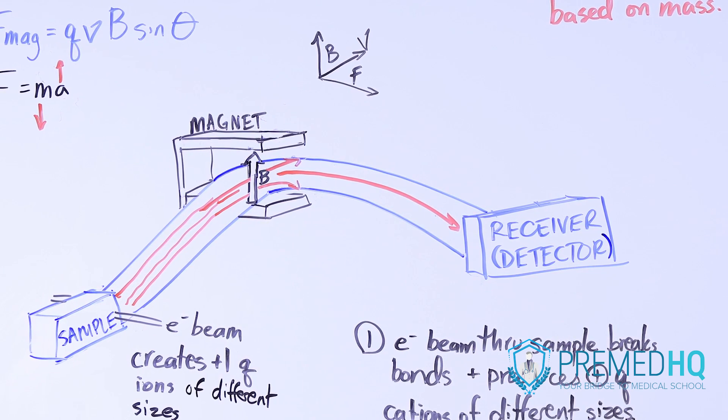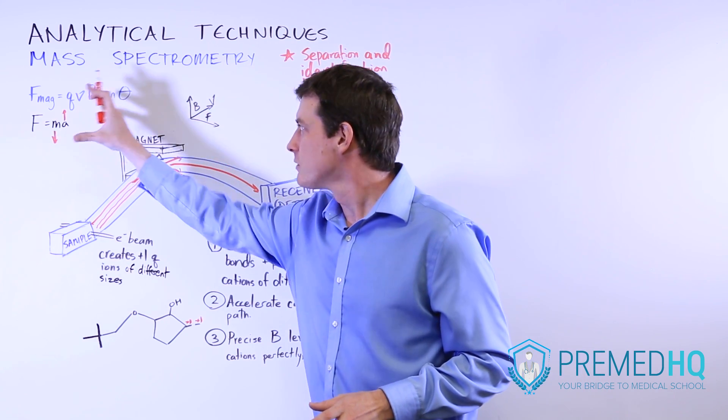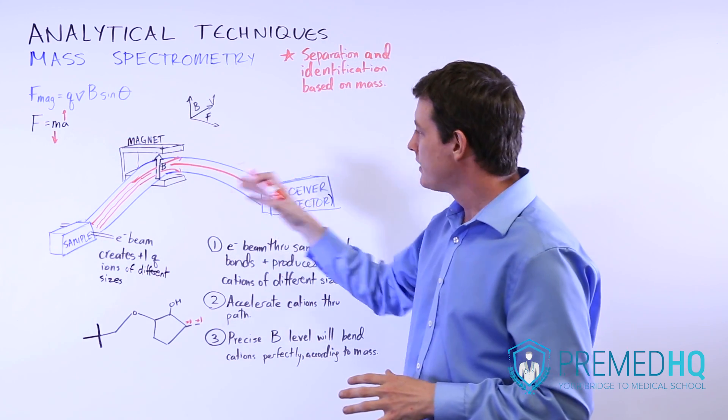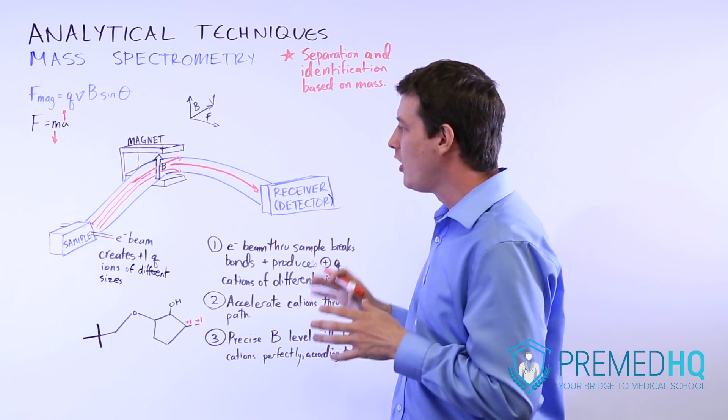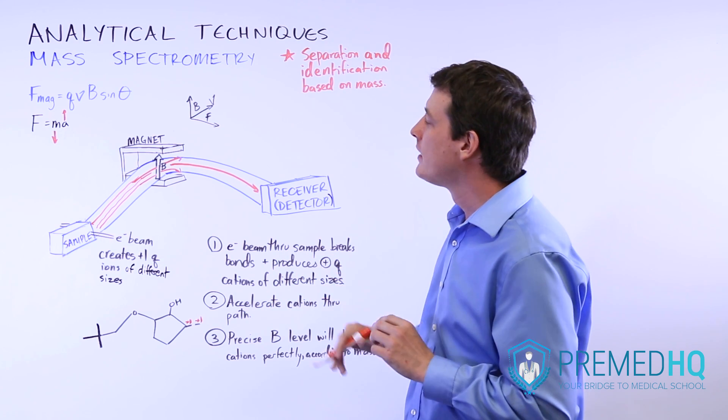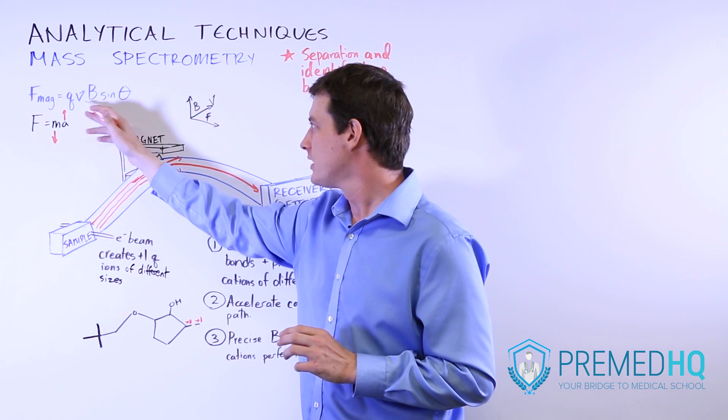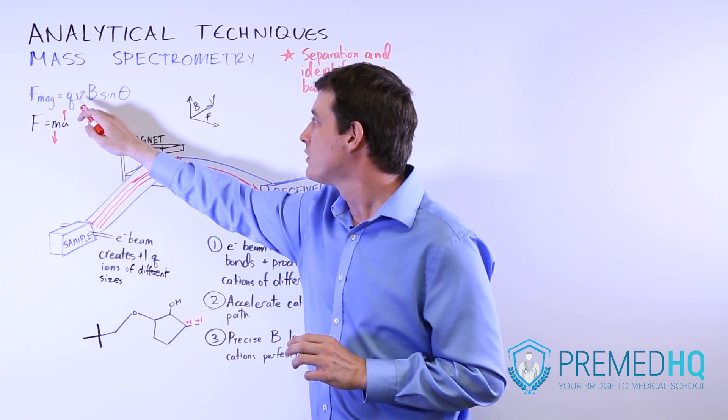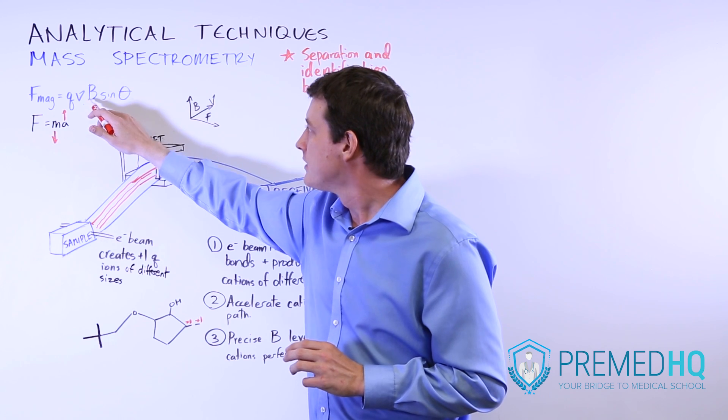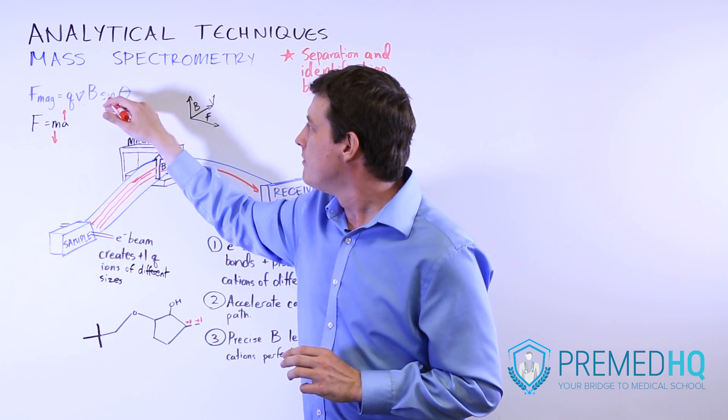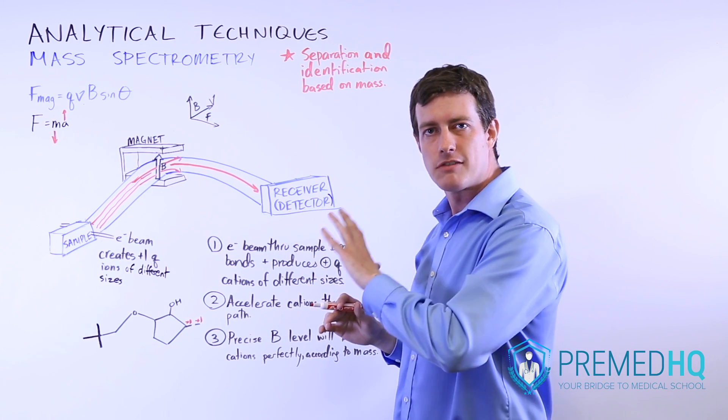Mass spectrometry takes advantage of the interesting interplay between the charge and the mass with these two different forces. Because the charge is the same for all of these different components, the large ones and the small ones, all have a cationic charge of plus one, they will experience the exact same force when they're within the exact same magnetic field and undergoing the same velocity. These two things are definitely happening: the charge is going to be the same and the velocity will be the same.